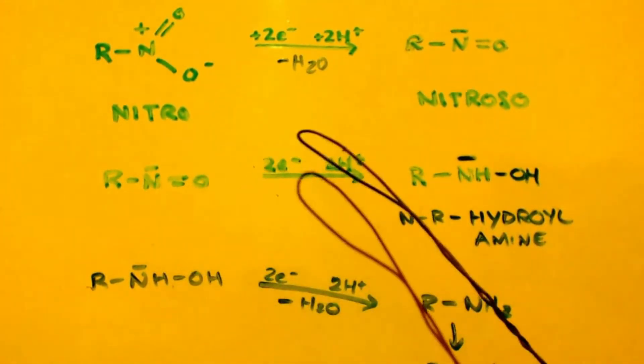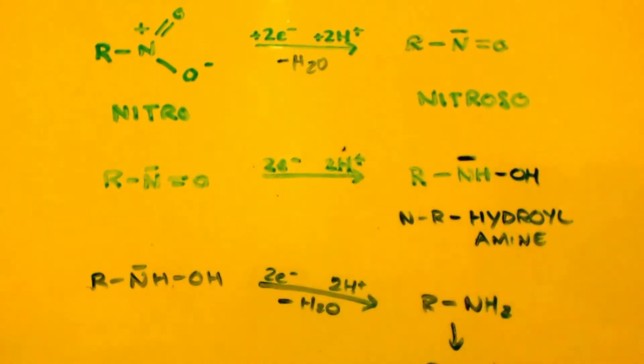Then you take that and you do the same thing again. You add two electrons and two protons. Only this time you're not making any water. And you make this N-substituted hydroxyl amine.